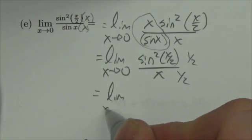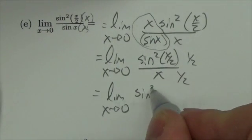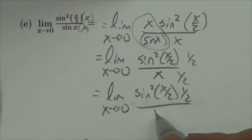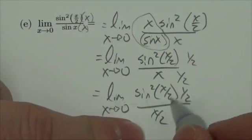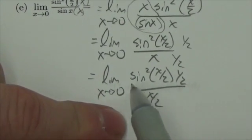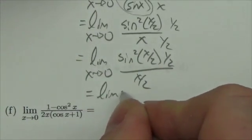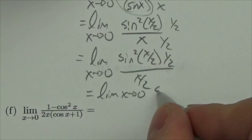...I'm going to get the limit as x approaches 0 of sine squared of x over 2 times 1 half, all over x over 2. Now sine of x over 2, over x over 2, is going to go to 1. That leaves me with the limit as x approaches 0 of sine of x over 2 times 1 half.